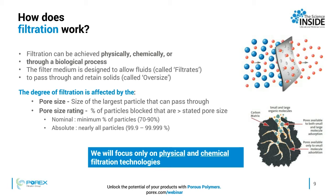There are two types of pore size ratings. One is nominal, wherein a certain minimum percent of particles, typically about 70 to 90 percent of particles, are retained. And there is also an absolute pore size rating, where nearly all the particles, typically from 99.9 to 99.999 percent, are retained by the filter.